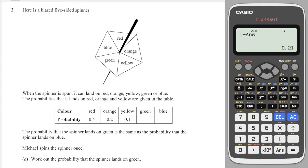Next question, we have a five-sided spinner with different colours, five different colours and the probabilities are given here. It says the probability that the spinner lands on green is the same as the probability that the spinner lands on blue. So I can assign x for green and x for blue because they are the same. And we need to work out the probability that the spinner lands on green. So we need to find x.